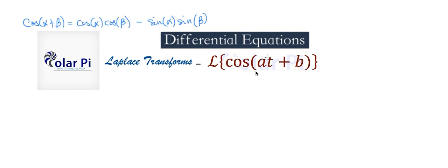To start, we need to work on cosine of at plus b using the cosine angle addition formula. We see that at is alpha, and b is beta.